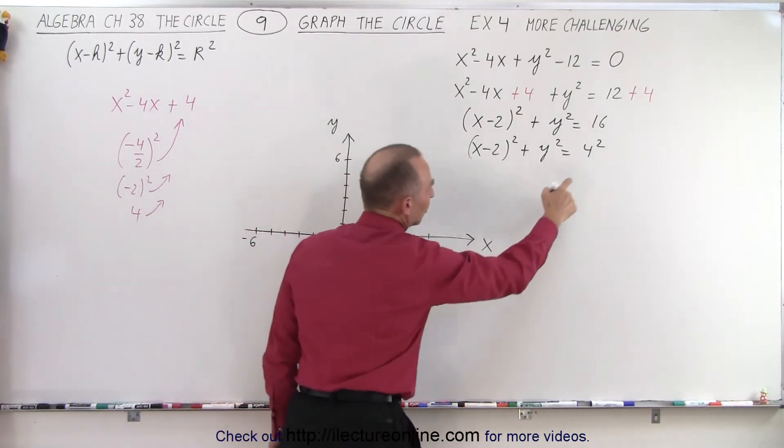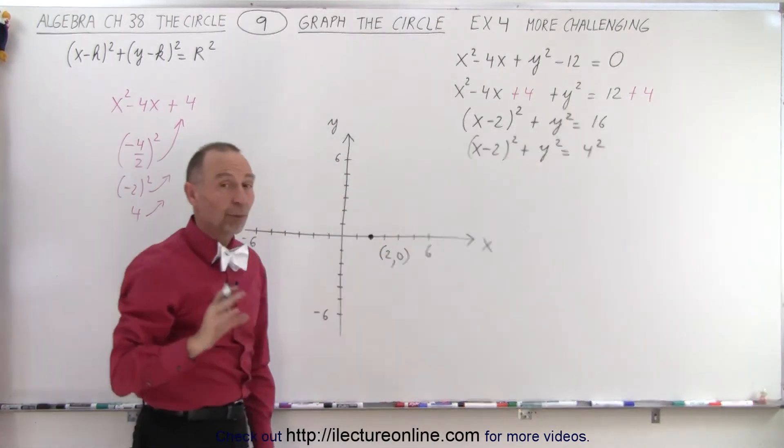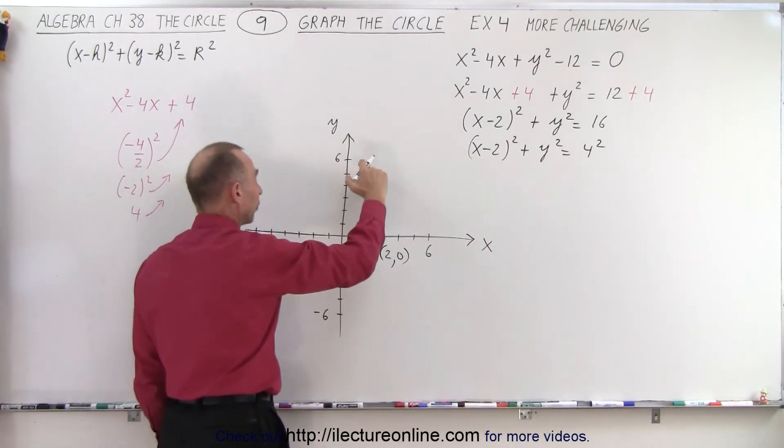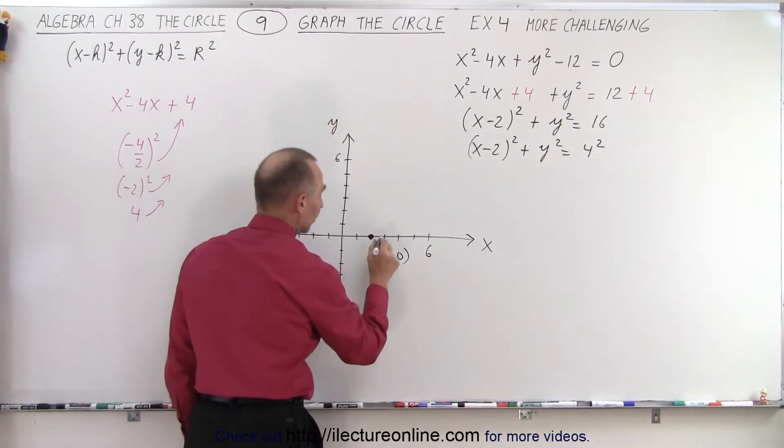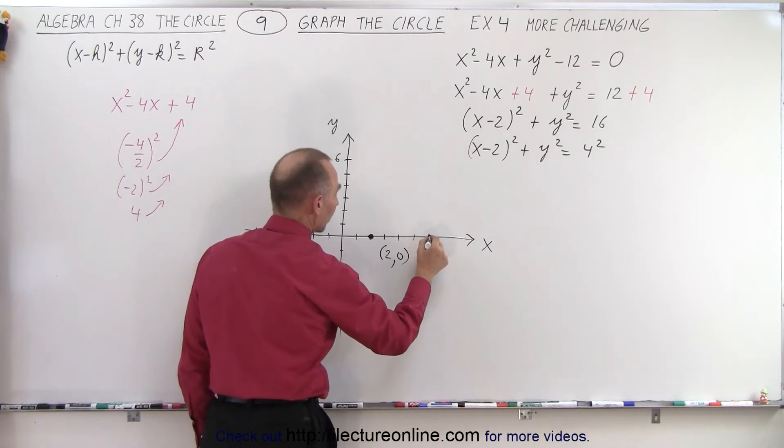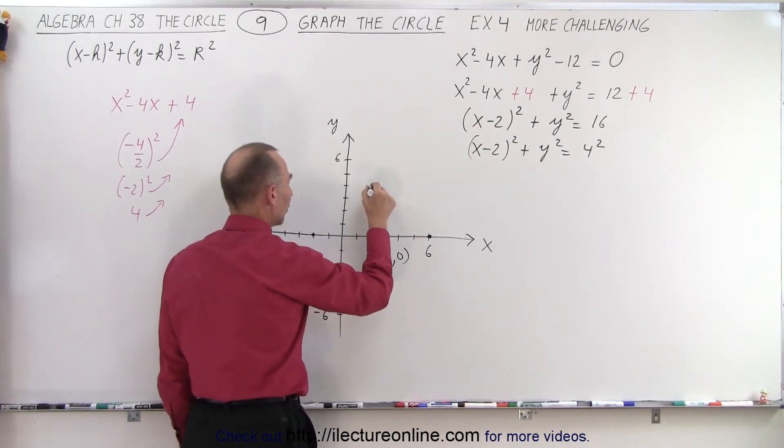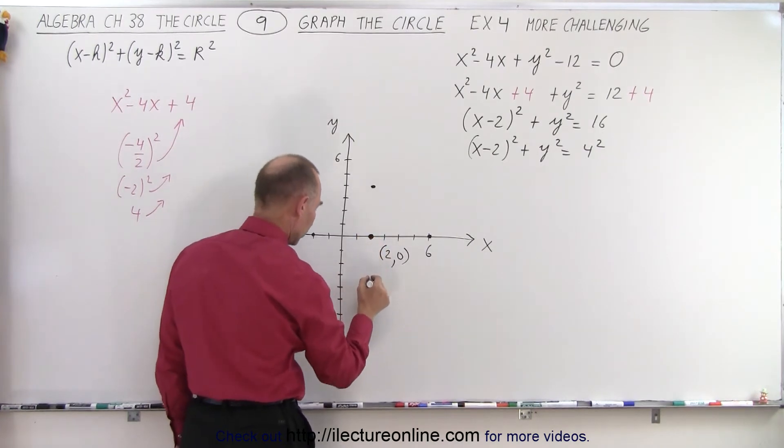Then the next thing we do is realize that the radius is equal to 4. So we find a point 4 units to the right, 4 units to the left, 4 units up, and 4 units down. So 1, 2, 3, 4, 1, 2, 3, 4, 1, 2, 3, 4, and 1, 2, 3, 4.